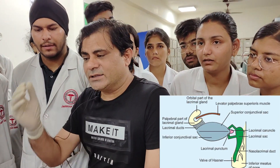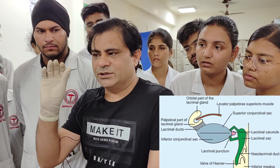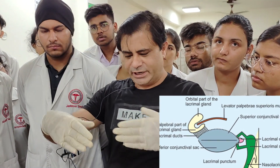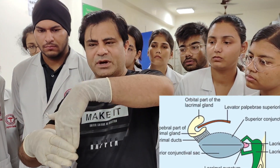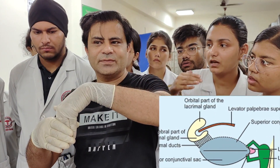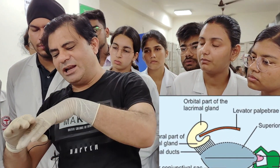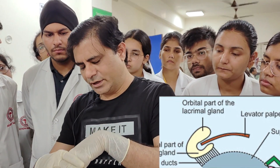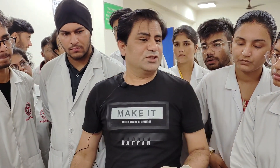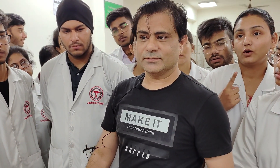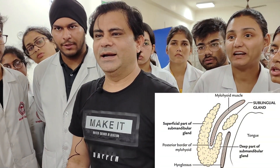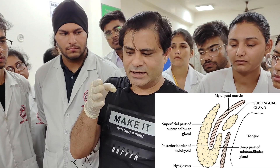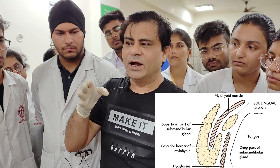The lacrimal gland has a major superficial portion and a smaller deeper portion, making it J-shaped. This J-shape is indented by a muscle. If you read your anatomy text, you'll find that a muscle indents this lacrimal gland to create that J-shape.